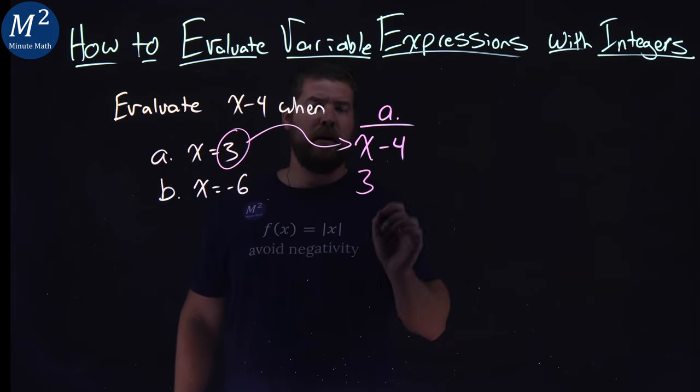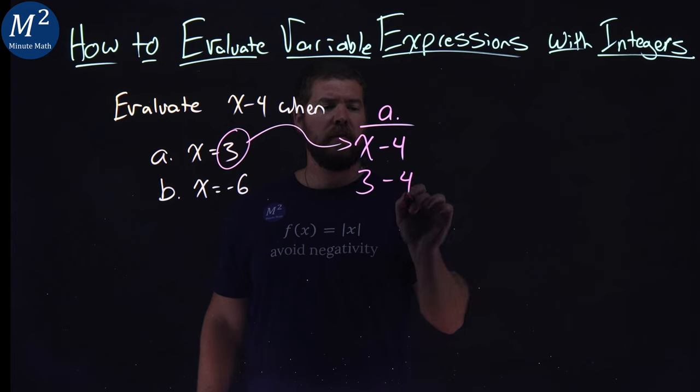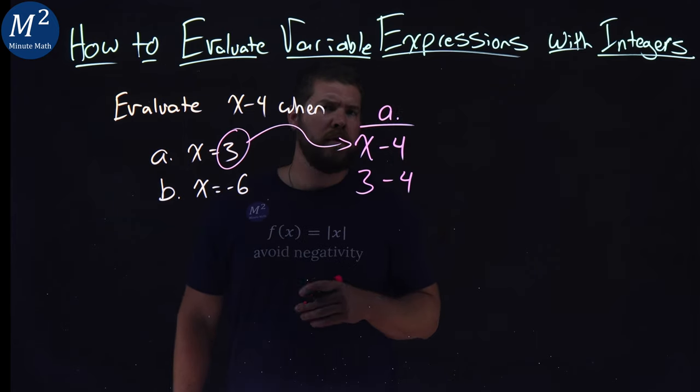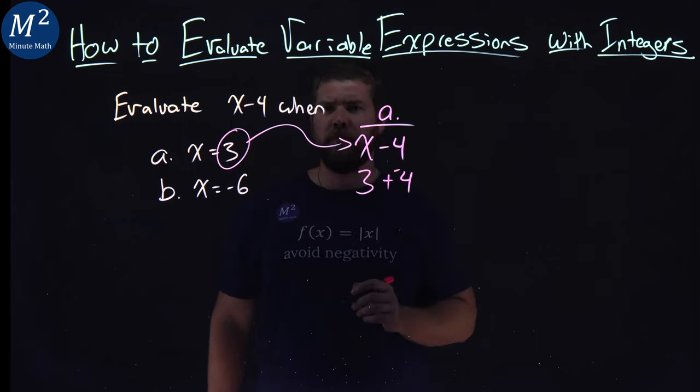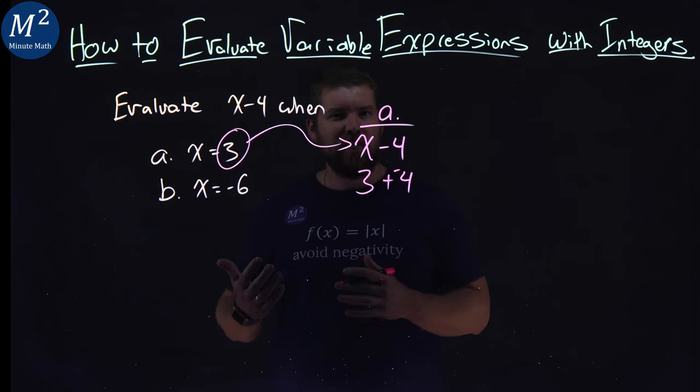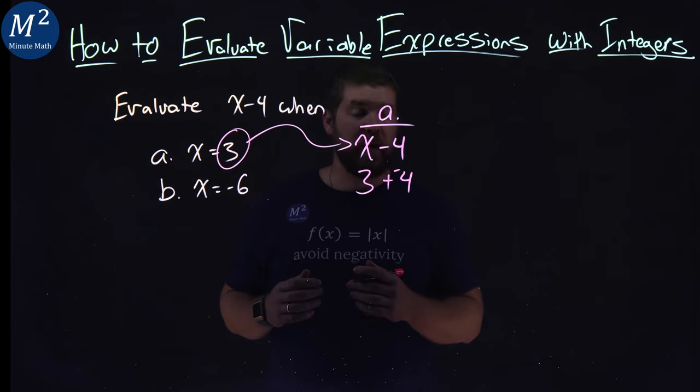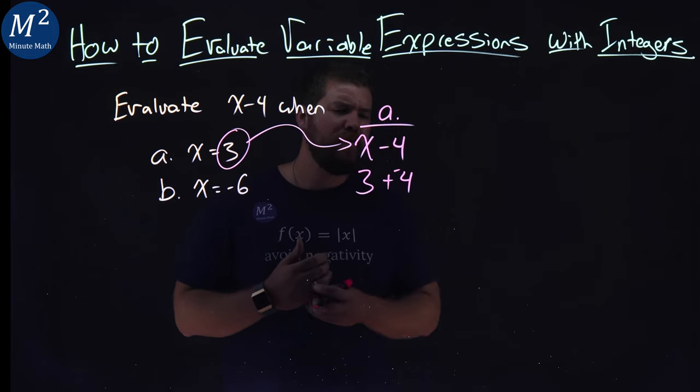So I have a 3 now instead of an x minus 4. 3 minus 4 is the same thing as adding a negative 4. Kind of helps you, maybe not, it's debatable.